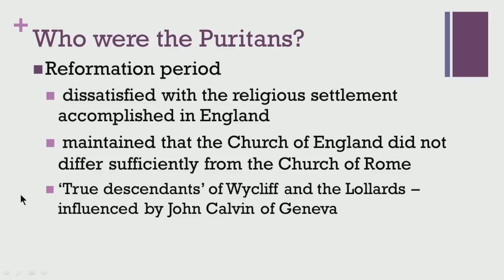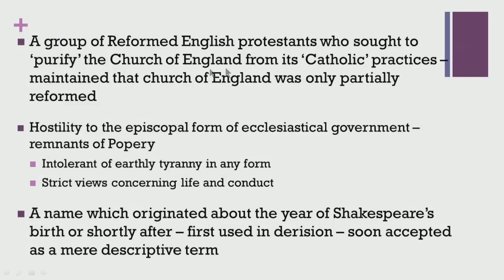We now need to take a look at who the Puritans were. The Puritans began to be forged as a community from the Reformation period onwards. They were dissatisfied with the religious settlement accomplished in England, maintaining that though the Church of England had managed to break away from the Church of Rome, it did not differ sufficiently enough from Rome. In that sense, they claimed to be the true descendants of Wycliffe and the Lollards — staunch believers in whatever Wycliffe proclaimed. They were also influenced by John Calvin of Geneva and were a group of reformed English Protestants who sought to purify the Church of England from its Catholic practices, maintaining that it was only partially reformed.